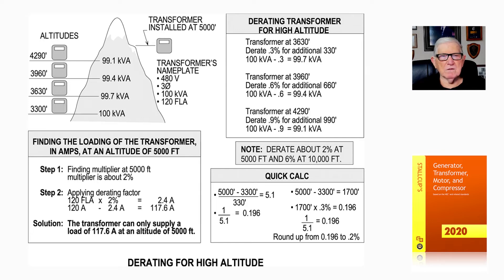We see that is correct, 99.4 kVA just as you see in the drawing. Now a transformer at 4,290 feet, derate 9%, that's 3 times 330 feet, an additional 990 feet. So 100 kVA minus 0.9 is 99.1, just exactly in your drawing. Now we would derate about 2% at 5,000 feet and 6% at 10,000 feet.